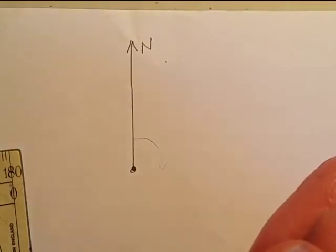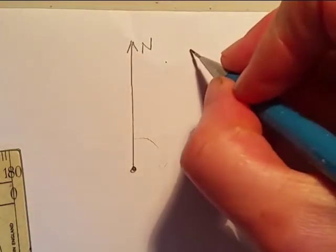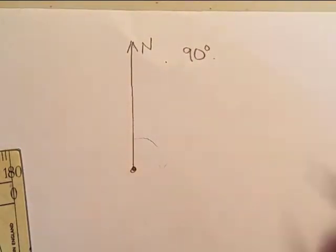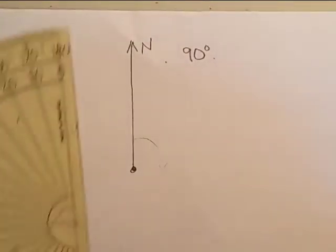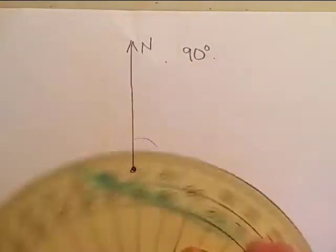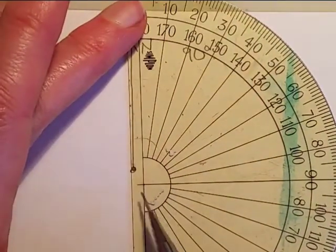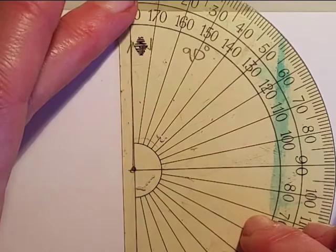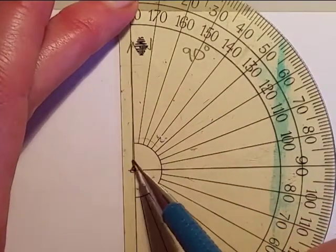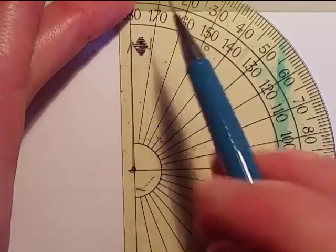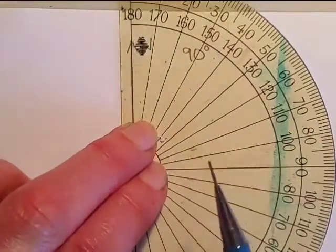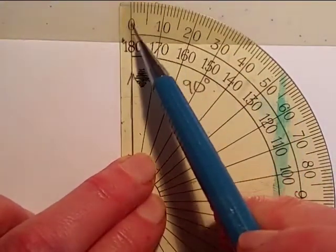The first one we're going to draw is a bearing of 90 degrees. So to do that you need to line up your protractor. We want to put the center of the protractor on that point that you're measuring your bearing from, and we need to line it up so that the zero line here is on the north line.